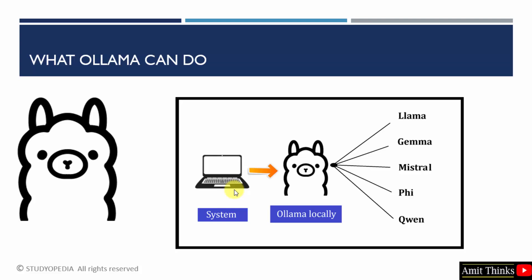Let us see what OLAMA can do and why it is so popular. It allows you to run LLMs on your local system — that is on your Windows 10, Windows 11, Mac and Linux. Installing OLAMA locally, you can easily download, run, deploy and manage LLAMA, GAMMA, Mistral, PHI, and Qwen — all these LLMs. Qwen is by Alibaba Cloud, PHI is by Microsoft, Mistral is by Mistral AI.